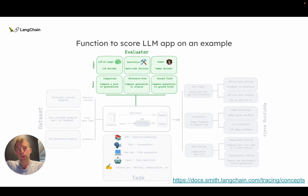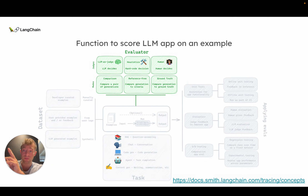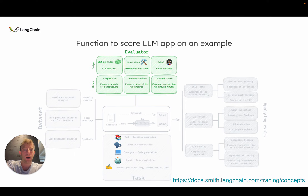Now, evaluators. There are different kinds of judges you can choose: LLM as a judge, heuristic judges like a function, a human judge, and then different modes like comparison — comparing two different traces or generations — reference-free, where there's no ground truth and you give the judge general criteria, or you can also provide ground truth.